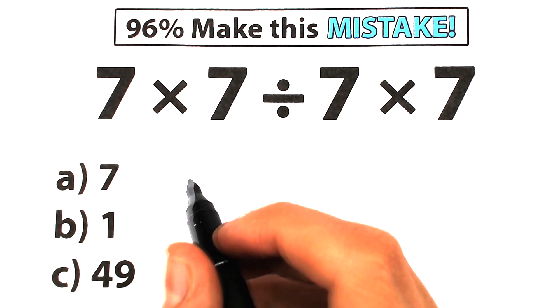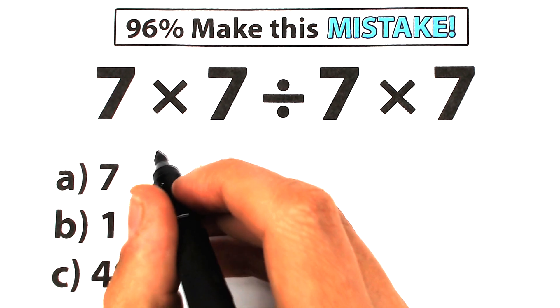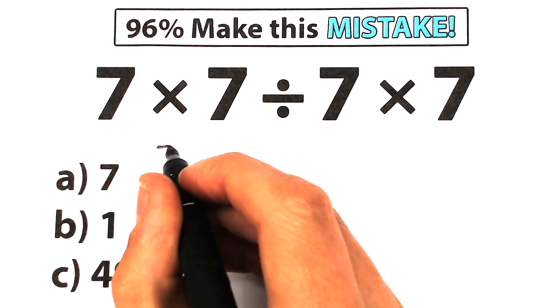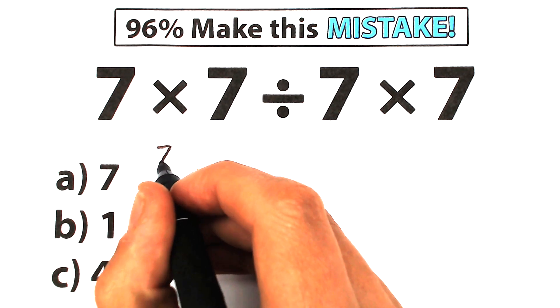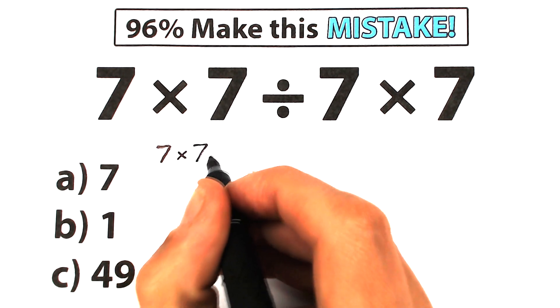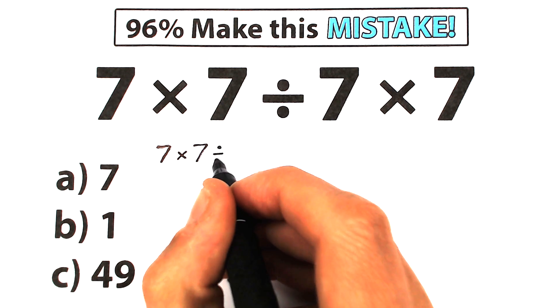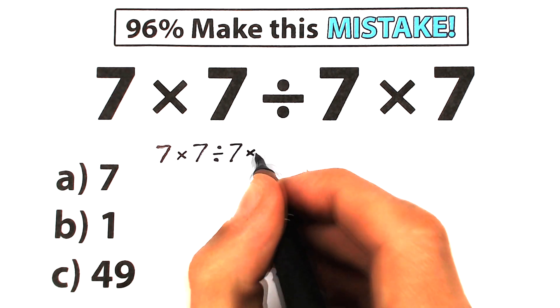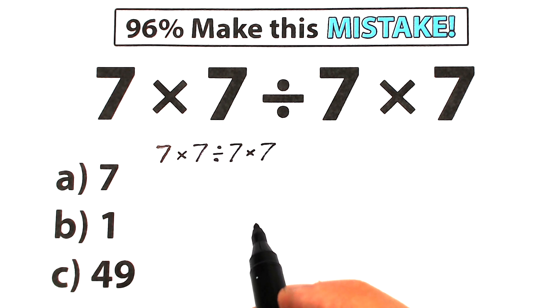Here's our challenge and our options. Right now let's try to solve it. First of all, I want to rewrite this challenge, so we have 7 times 7, divided by 7, times 7. Here's our challenge.